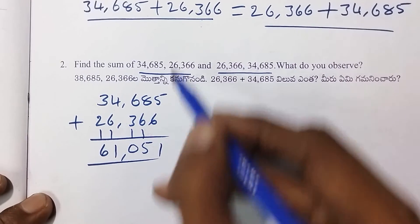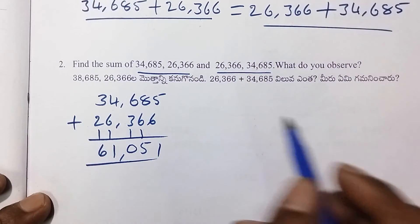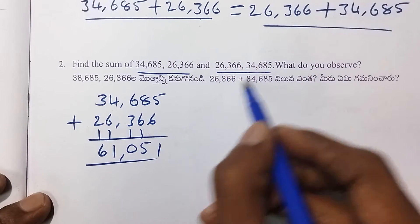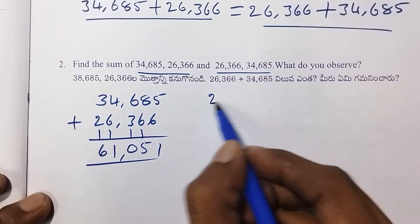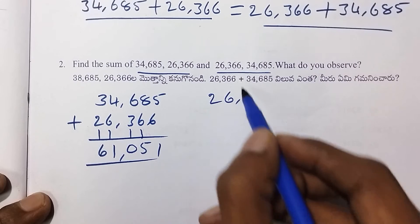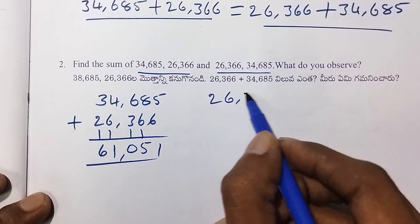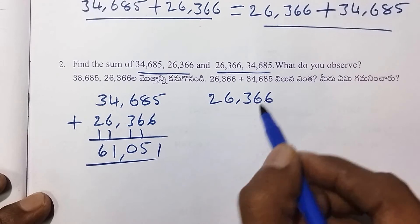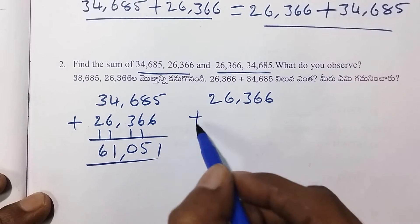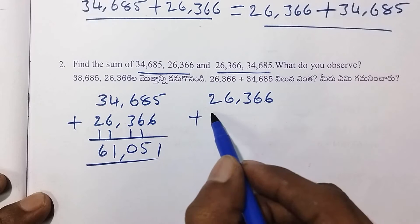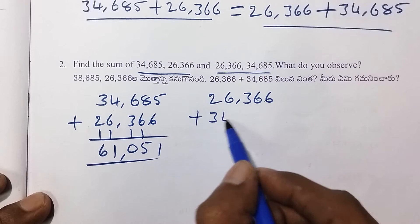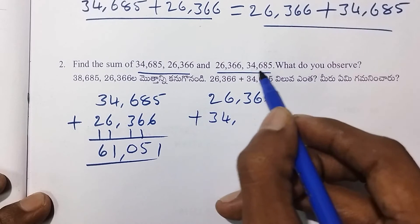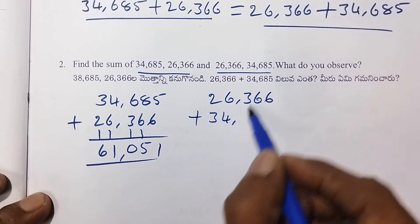The answer is 61,051. Same in that number set — it should be 26,366 plus 34,685 gives the same result, demonstrating that the order of addition does not change the sum.